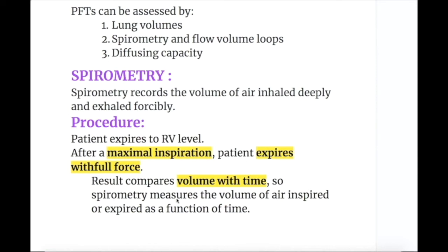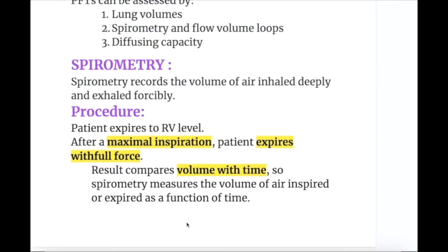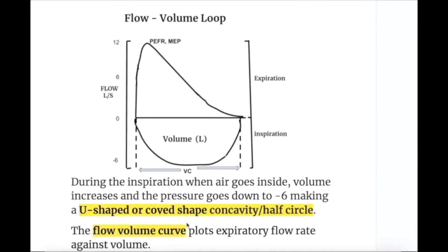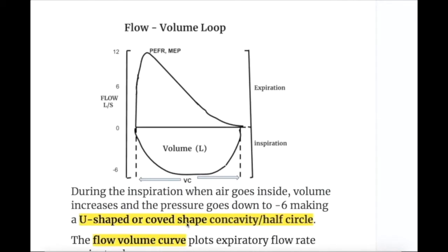Spirometry results compare volume with time. Spirometry measures the volume of air inspired or expired as a function of time. During inspiration, when air goes inside, the volume increases and the pressure goes down to minus six, making a U-shaped or covet-shaped concavity or half circle.